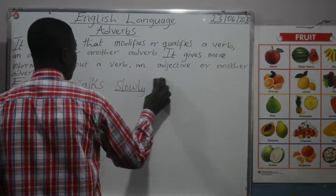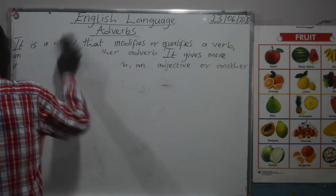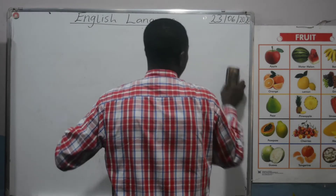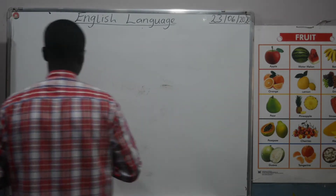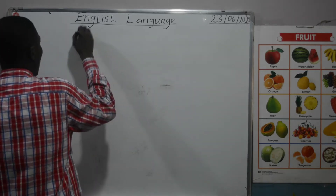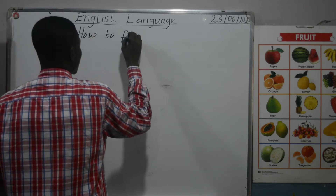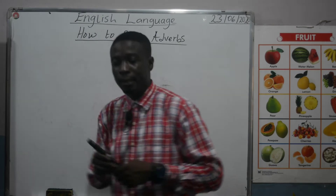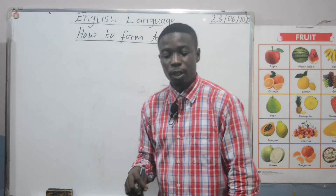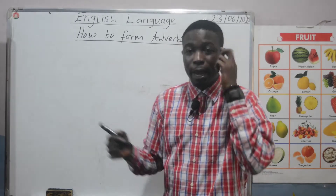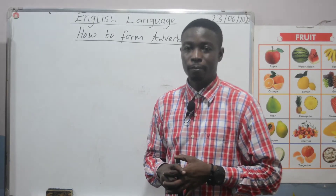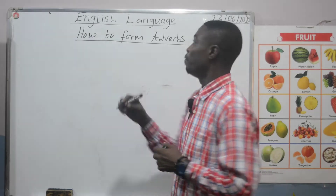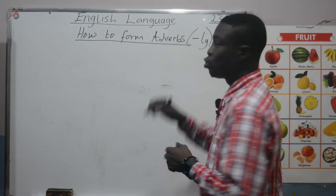We can move on to how to form adverbs. In our previous lessons about describing words, we learned about adjectives, and we listed some examples of adjectives. So, one way of forming an adverb from an adjective is to add '-ly' to an adjective.